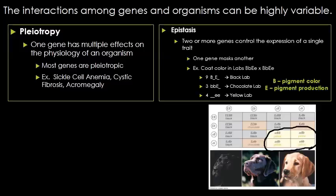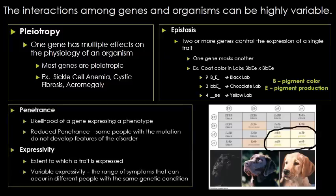You can actually tell the difference between the B alleles if you look at the nose and eyelid colors of the dog. In the yellow lab shown in the example below, it has a very dark nose and eye rims, so there is probably a different heterozygous B allele present — maybe homozygous, but we don't know for certain.